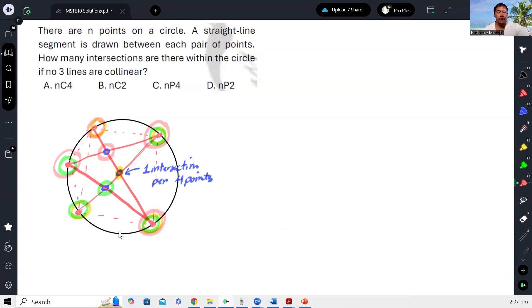So meaning, kung meron na tayo ngayong n number of points on the circle, okay, all we have to do to count will be to use combination, no? So that would be n combination of 4. That is the total number of intersections.